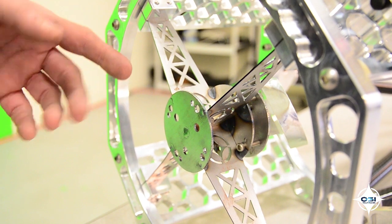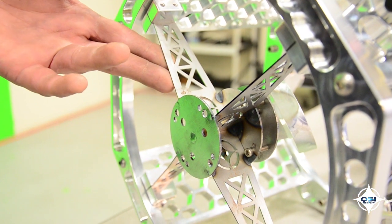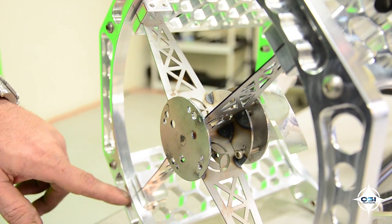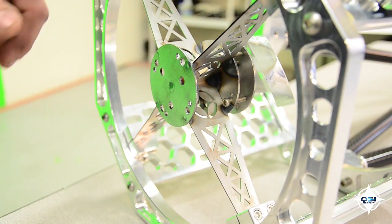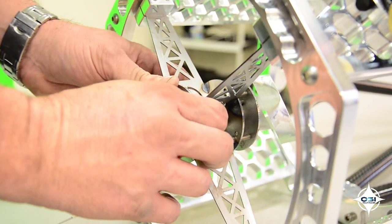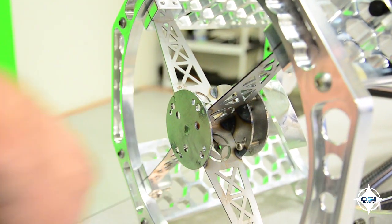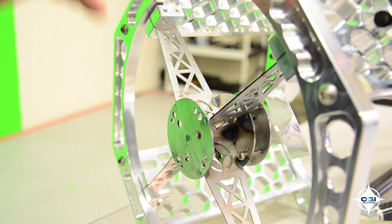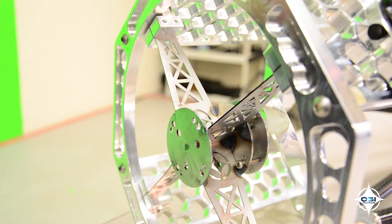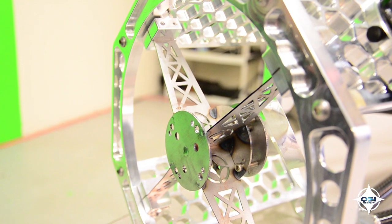So our secondary support system is laser cut steel that is held under high tension by this mounting system. The net effect is that this is very rigid, very vibration free. It's not going to allow collimation changes or allow vibrations into your imaging train.